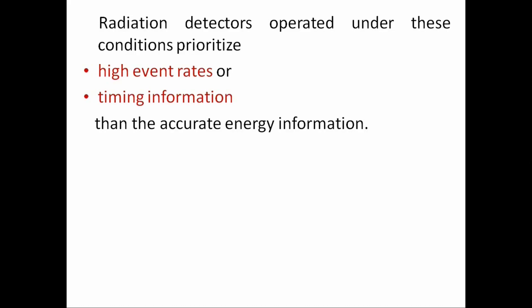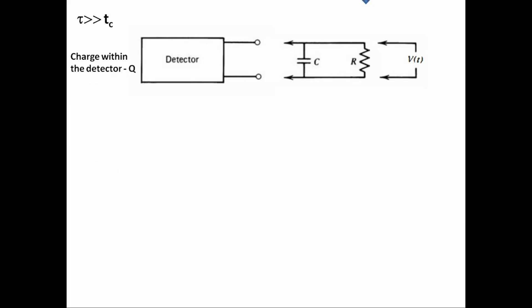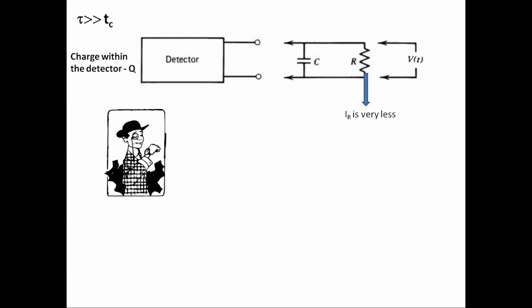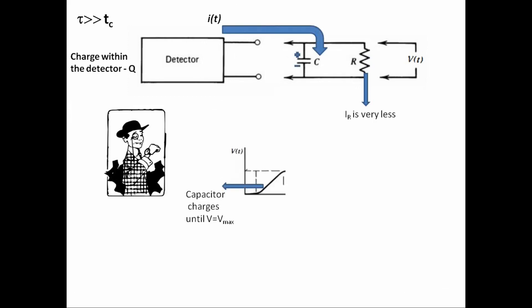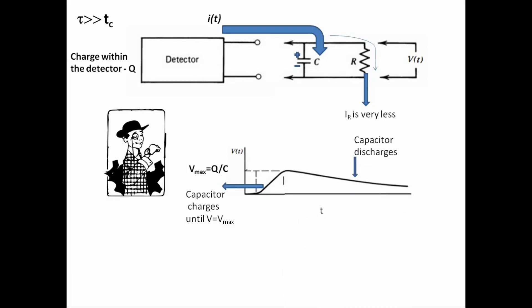The second case is where the time constant is much larger than the charge collection time, which is generally more common. In this case, very little current flows in the load resistance during the charge collection time, and the detector current is momentarily integrated on the capacitance. Assuming the time between pulses is sufficiently large, the capacitance then discharges through the resistance, returning the voltage across the load resistance to zero. The corresponding signal voltage Vt is illustrated as shown.